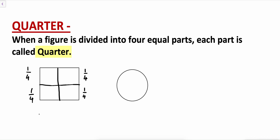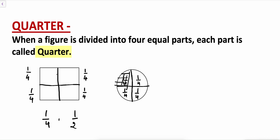If I want to write quarter in fractions it will be one by four and the half is one by two. Let's divide this circle into four equal parts. Each part is one by four — this is also one by four, this is also one by four, and this is also one by four. So if I am talking about this portion, this portion is a quarter of a circle. One portion is a quarter.